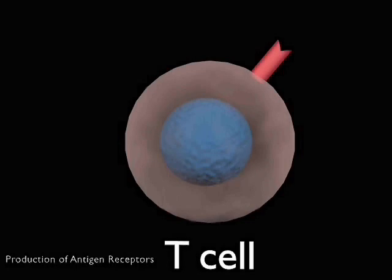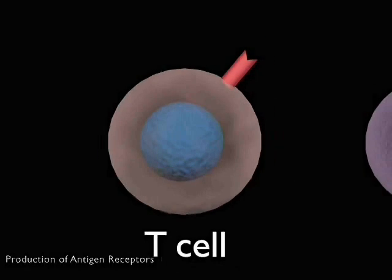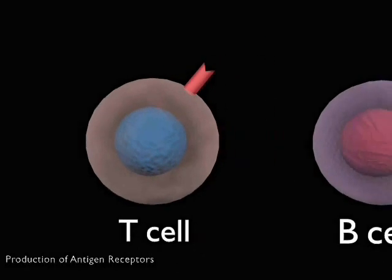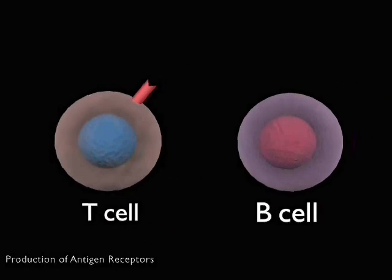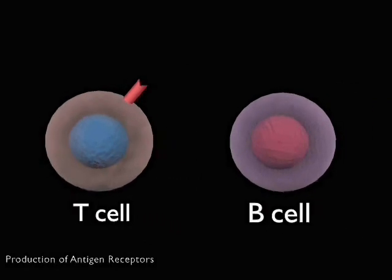In order to recognize antigens, the lymphocytes generate antigen receptor molecules, which specifically recognize a single antigen. There are two groups of lymphocytes, B cells and T cells.